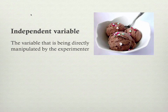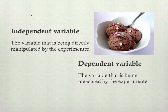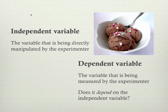The other variable is called a dependent variable, and that's the variable that's being measured by the experimenter. Now this is a little hard to remember — what's the independent variable, what's the dependent variable. The way that I remember it is by looking at the term dependent variable, because that one actually makes some sense. It's called the dependent variable because we are wondering if it depends on the independent variable.